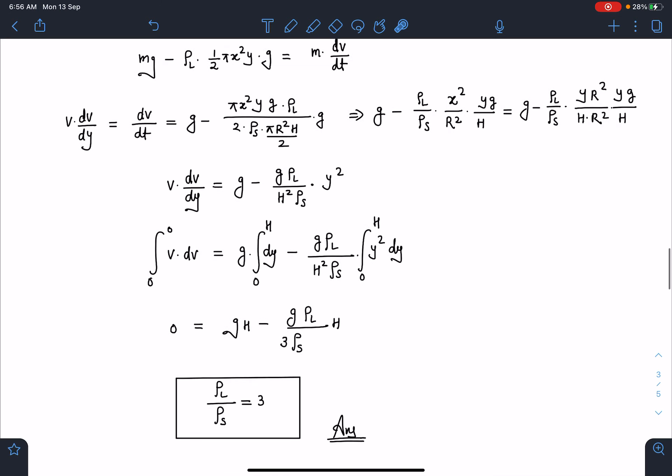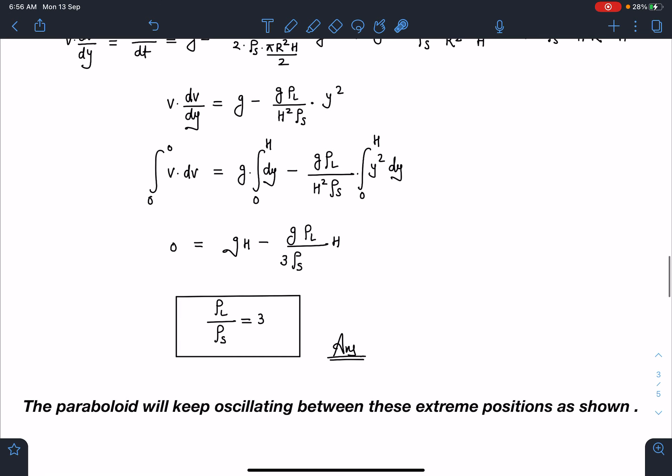So g gets cancelled, h gets cancelled and a very nice answer we are going to get from here that rho l by rho s is 3. This is going to be the final answer for this problem.